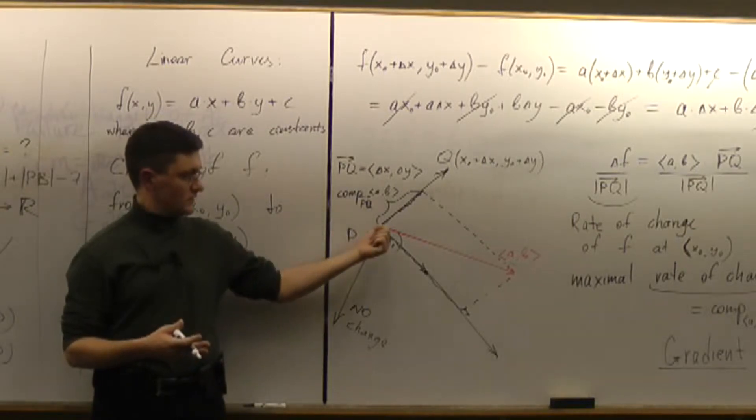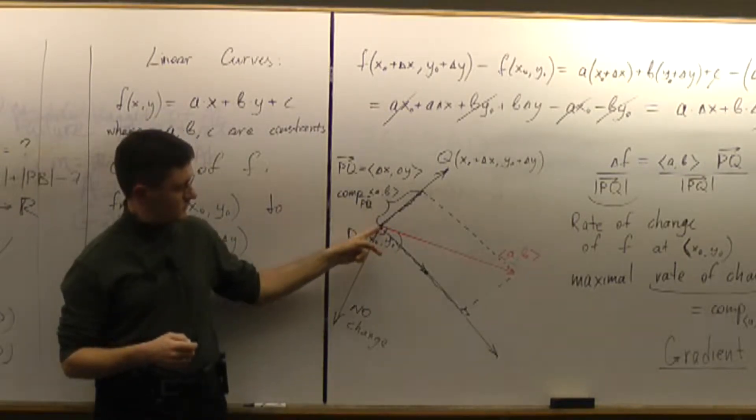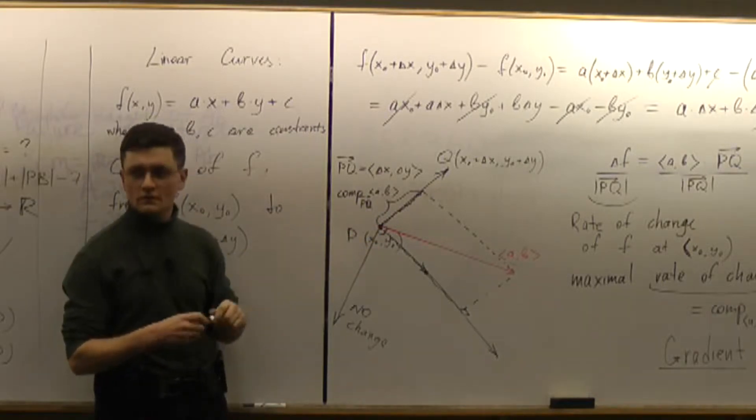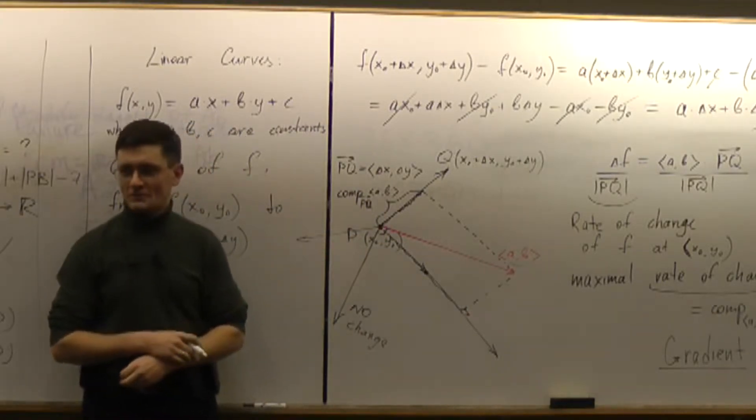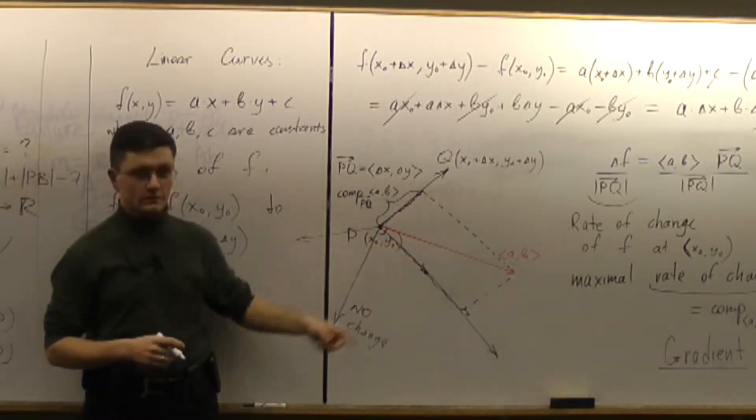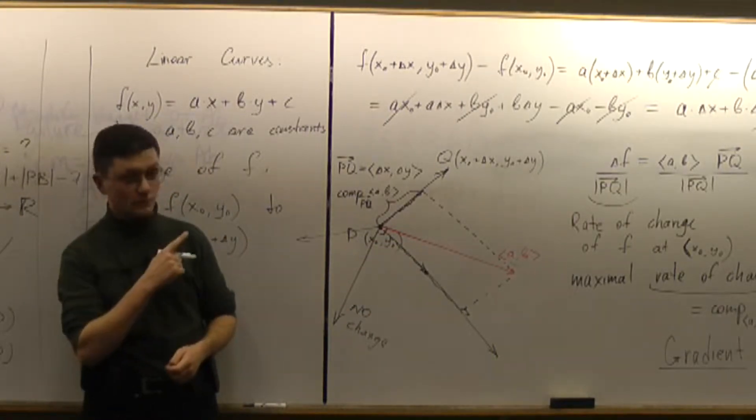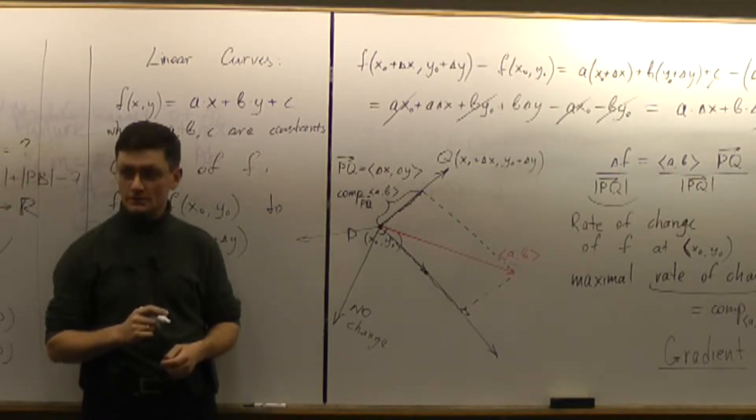But what if I go this way? What if I go backward with respect to that vector? What's going to be the component? It's going to be negative, isn't it?